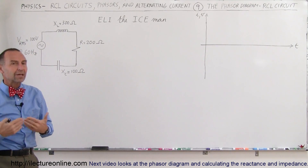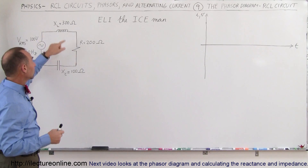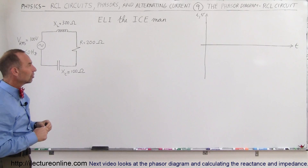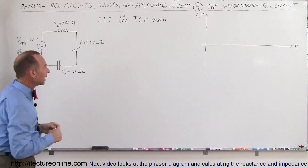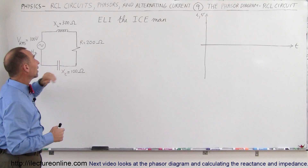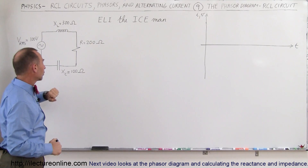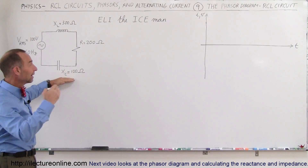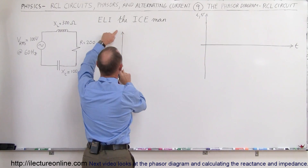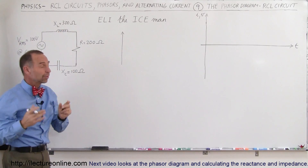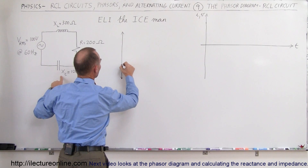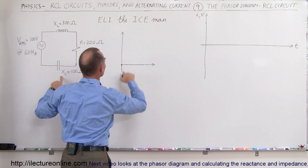So how do we draw a phasor diagram from that? We draw the values of the resistance and the reactances as vectors. Since the reactance of the inductor opposes the current first — because the inductor opposes a change in current — that comes first in the phase. Then comes the resistance, and then the capacitor opposes the current later in time. So we draw the inductor reactance upward with a length of 300, the capacitor downward at 100, and the resistance horizontally at 200 ohms.